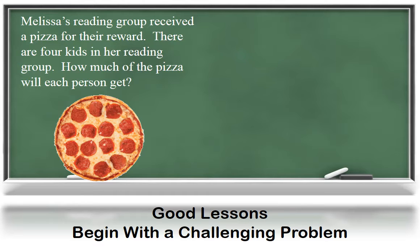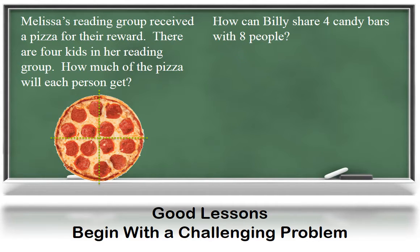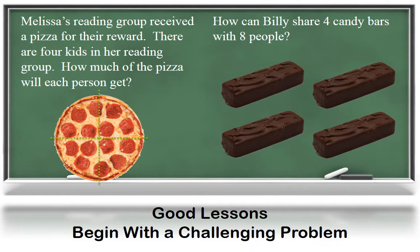In this first problem, there is one object to be divided amongst four children, the pizza. In the second problem, how can Billy share four candy bars with eight people, deals with multiple objects.